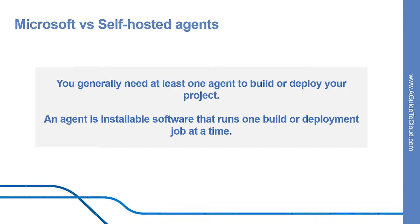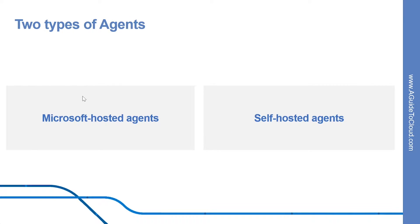Let's look into Microsoft versus self-hosted agents. To build your code or deploy your software, you need at least one agent. As you add more code and people, you will eventually need more. When your build or deployment runs, the system begins one or more jobs. An agent is installable software that runs one build or deployment job at a time. Now let us look into the two types of agents: Microsoft hosted agents and self-hosted agents.